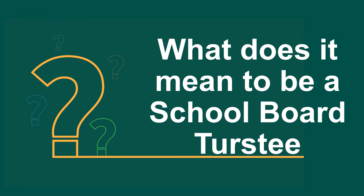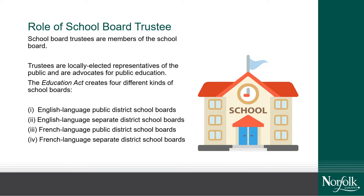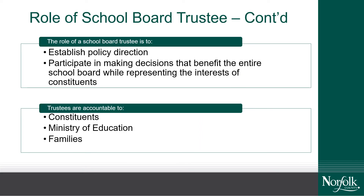What does it mean to be a school board trustee? School board trustees are members of the school board and are locally elected representatives who advocate for public education. The Education Act creates four different kinds of school boards: English language public, English language separate, French language public, and French language separate. The role of a school board trustee is to establish policy direction, participate in making decisions that benefit the entire school board while representing the interests of constituents. Trustees are accountable to constituents, ministries of education, and families.